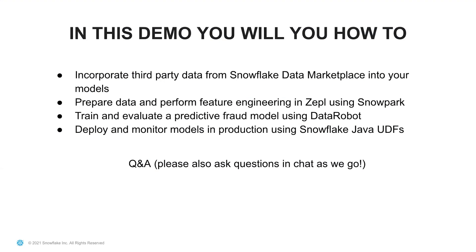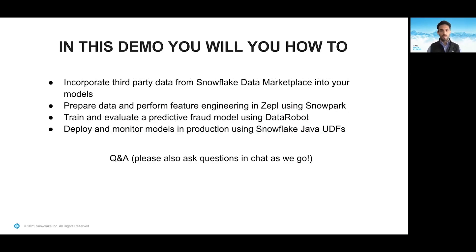At a very high level, we're going to cover four things. First, we're going to show you how easy it is to leverage third-party data to increase the performance of your model's predictability. Then we're going to prepare the data using a Zeppel notebook and do all the feature engineering using Snowpark. We'll then train and evaluate a fraud prevention model using DataRobot, and finally export that trained model and run inference directly in Snowflake using the new Java UDF functionality. Ask questions along the way, and we'll try to answer as many as we can after the demo.